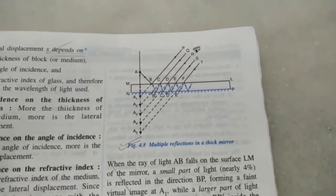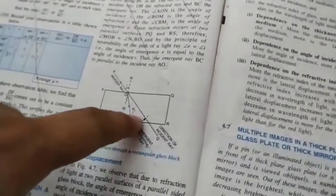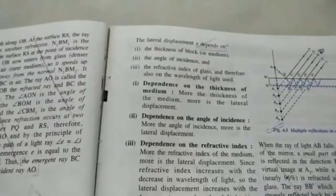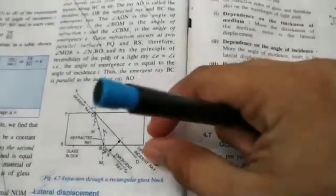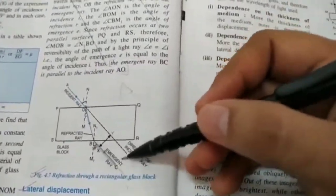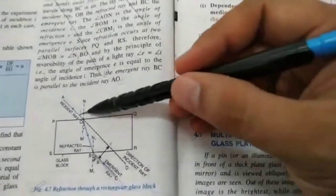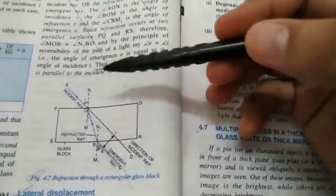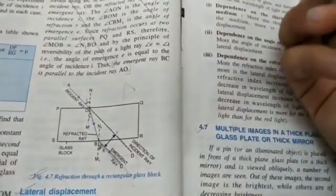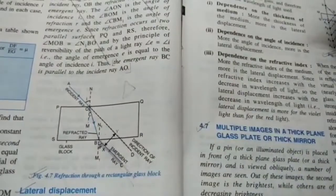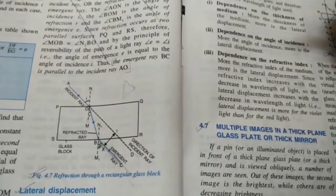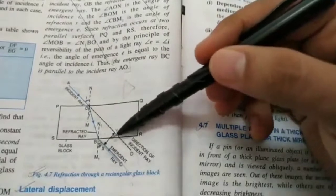The factors affecting lateral displacement are: first, the thickness of the medium — a thicker glass slab causes more lateral displacement. Second, the angle of incidence — a larger angle of incidence means more lateral displacement. Third, the refractive index — a block made of diamond would cause greater lateral displacement than glass. And lateral displacement for violet light is greater than for red, since violet bends more.